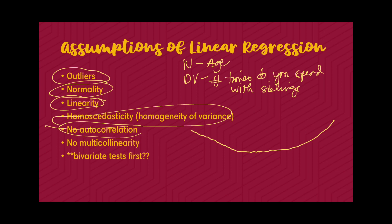Autocorrelation is a concern when dealing with time series data — when you're collecting a certain variable across multiple periods of time, you must ensure those observations are not correlated. There is a specific test called the Durbin-Watson test to check for autocorrelation. This may not be as important when working with cross-sectional data like survey forms.